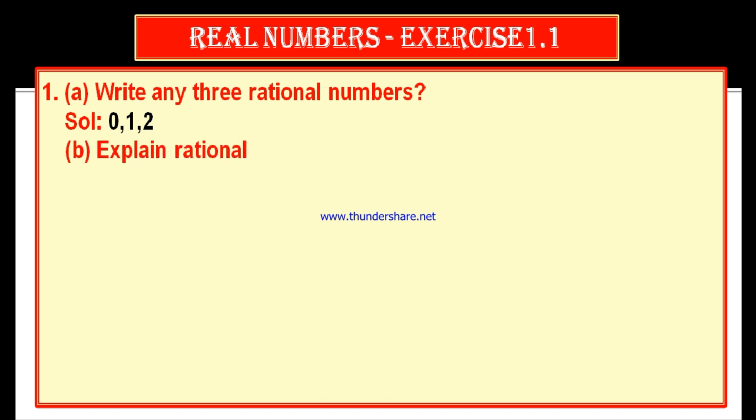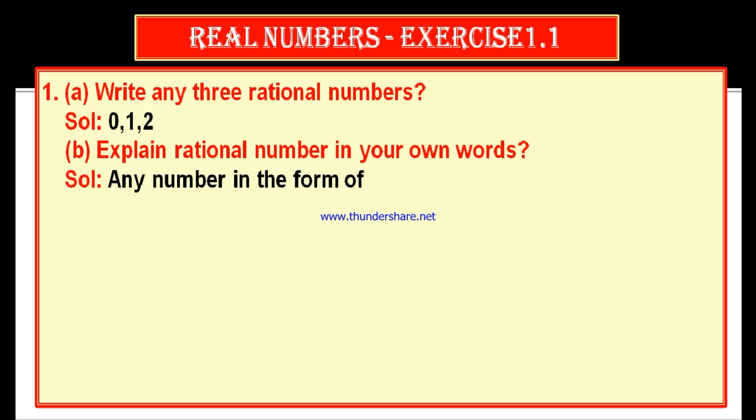Second part, bit B: explain a rational number in your own words. We have to write the definition. The solution is: any number in the form of p by q, where p and q are integers and q not equal to 0, is called a rational number.